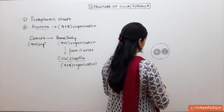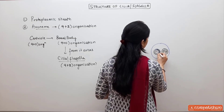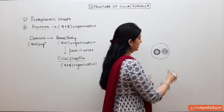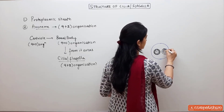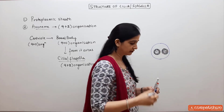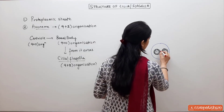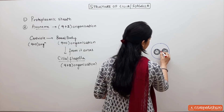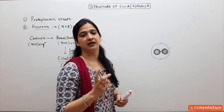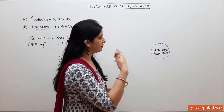C1 and C2 are each made up of 13 protofilaments. These 2 singlet fibrils are connected by means of a bridge. These 2 singlet fibrils are made up of the dynin protein and are surrounded by the central proteinaceous sheet. At the periphery, 9 doublets are present.